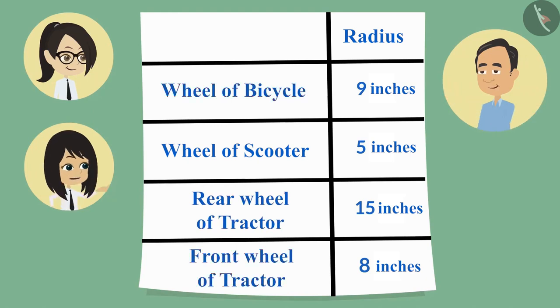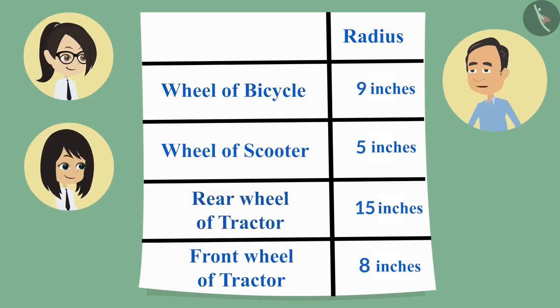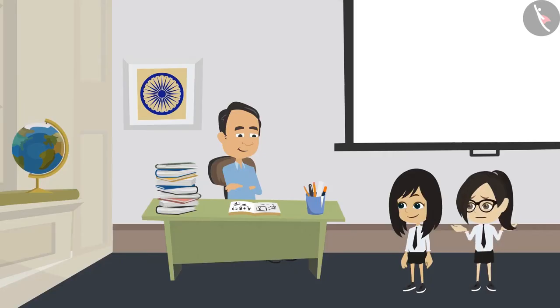Sir, we had seen all the wheels, so we were able to tell that rear wheel of the tractor is the largest. I thought that you were looking at the measurement of these radius. Sir, how can we tell whether a circle is small or big by measuring the radius?